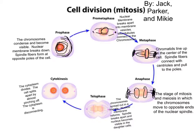The next phase, telophase. The chromosomes spread out in a triangle. The nuclear membrane reforms and the spindle breaks apart. The nucleus becomes visible in the daughter cells.